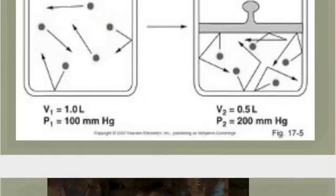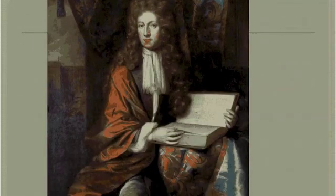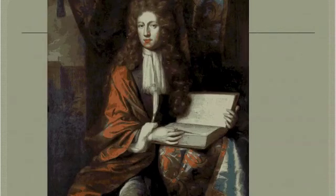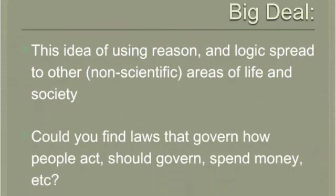Make sure you understand that Boyle's view of atoms and molecules was new at the time, which was once again competing with the theories of Aristotle, just like Newton and Copernicus did earlier. Here's the big deal: this use of reasoning and logic in science was then used to analyze things later in society, which is what we'll get to in the next unit — how they use this to govern politics, economics, psychology, and all sorts of things.